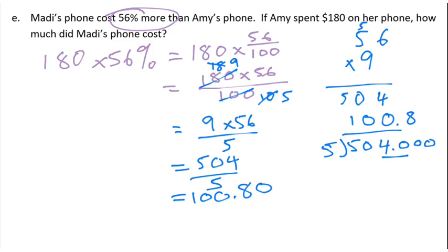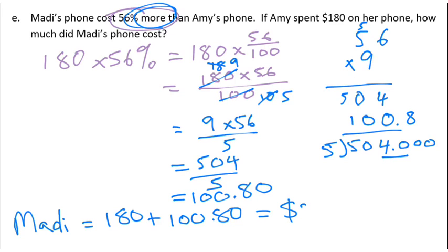But remember, Maddie's cost 56% more. So that means Maddie's phone cost $180 plus this $100.80, and that would give a total of $280.80.